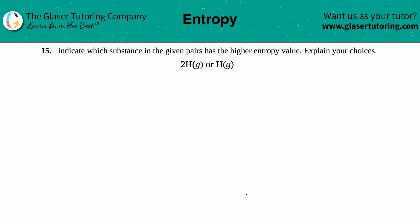Number 15: indicate which substance in the given pairs has the higher entropy value and then explain your choices. In this case we have 2H gas or H gas. First, always look at the states — if the states are different we could talk about entropy by just looking at the states. However, in this case they're both gases, so I can't distinguish entropy based on states.